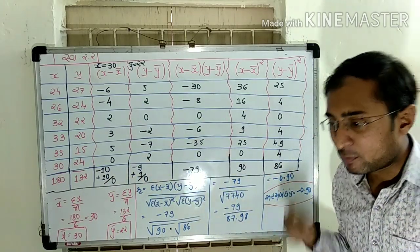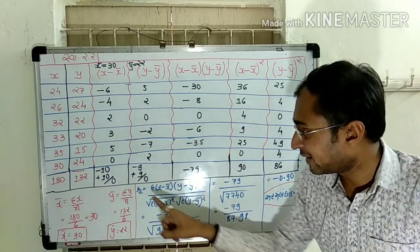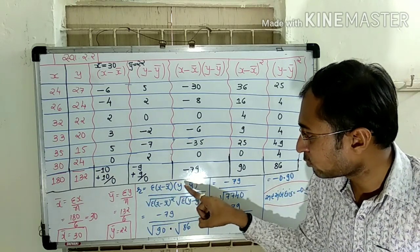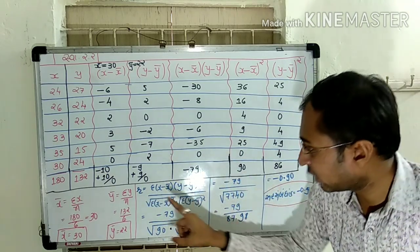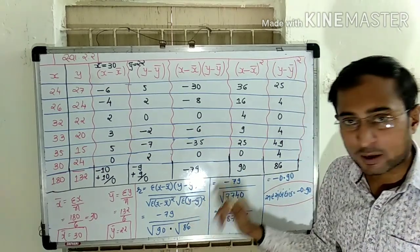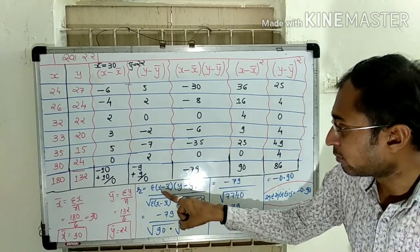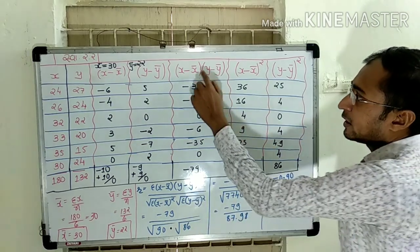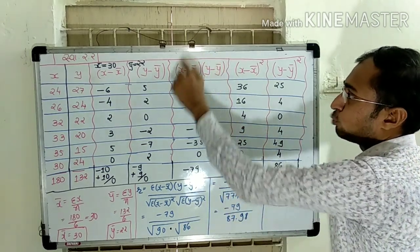X minus x bar squared, y minus y bar squared. Sigma x minus x bar squared, and under that y minus y bar squared, this is the total.